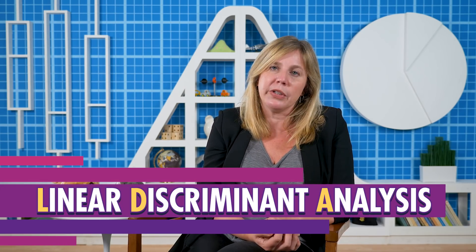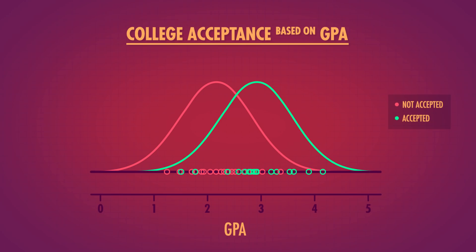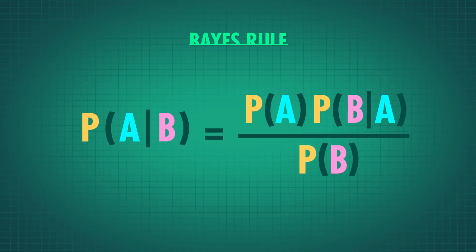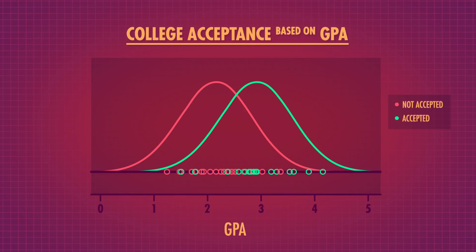Logistic regression isn't the only way to predict the future. Another common model is linear discriminant analysis, or LDA. LDA uses Bayes' theorem to help us make predictions. Say we want to predict whether someone would get into a local state college based on their high school GPA. The red dots represent people who did not get in, green represents people who did. We can estimate the GPA distributions of each group. If a new student wants to know if they'll get in, we use Bayes' rule and these distributions to calculate the probability. Since student Annalisa has a 3.2 GPA, we'd predict that she does get in.